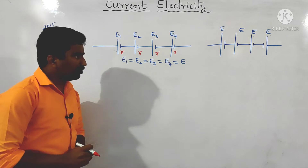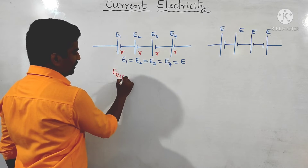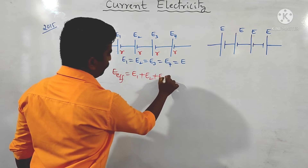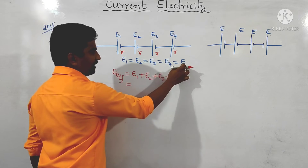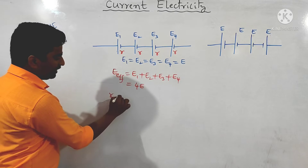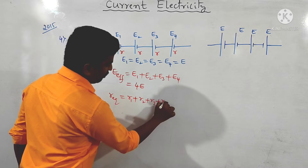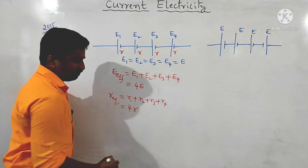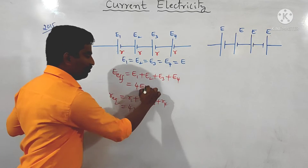In a correct series connection, the effective EMF is e1 + e2 + e3 + e4, and the effective internal resistance is r1 + r2 + r3 + r4. Since all internal resistances are equal, that gives 4r. When correctly connected, the effective EMF is e and internal resistance is 4r.